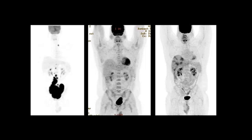Hi, this is Piyush Bhargava and I have an interesting case to share with you. On the slide we have several whole body images of a patient with history of lymphoma. The first study on the left shows extensive hypermetabolic lymphadenopathy in the abdomen and pelvis. A couple of foci are seen in the chest and also in the upper abdomen.